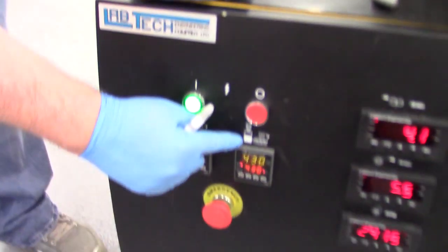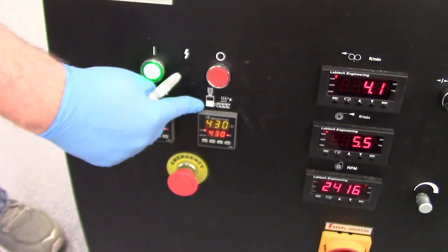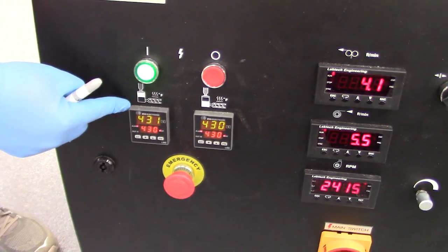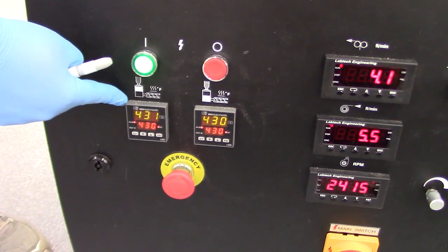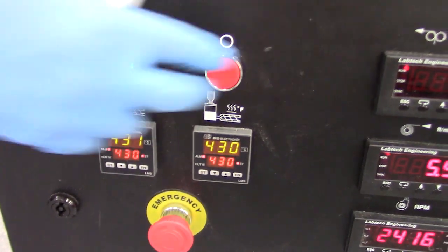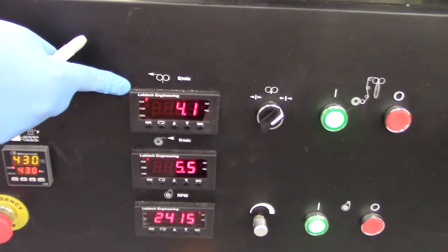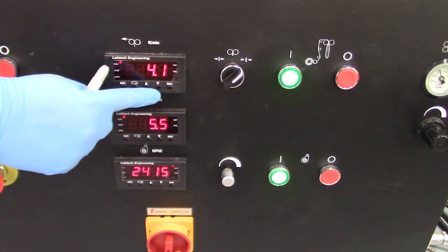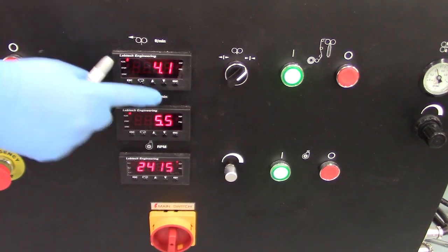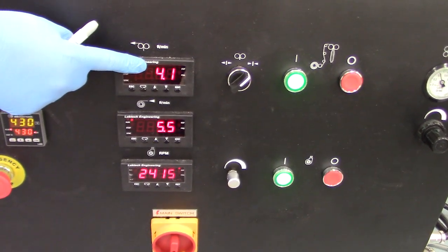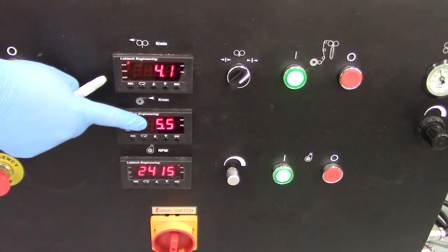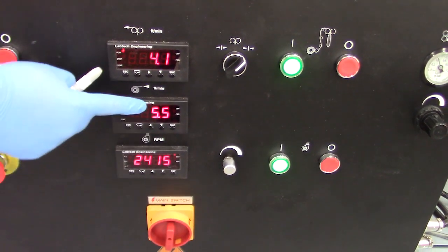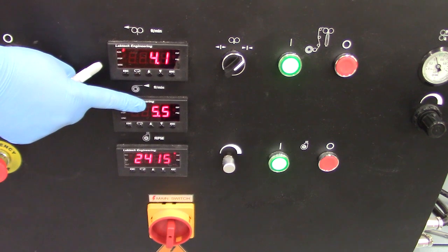Our bottom die zone is at 430 degrees Fahrenheit and our top die zone is at 430 degrees Fahrenheit. Over here we have our nip roll speed which is increased and decreased with these arrows, and is set to 4.1 feet per minute. We have our drive roll speed which is controlled with these two arrows, and is currently set to 5.5 feet per minute.